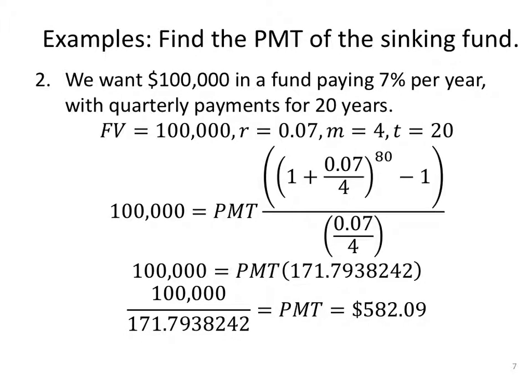Once again, we could find the payment. We want $100,000 in a fund paying 7% per year with quarterly payments for 20 years. Identify your variables. Future value is $100,000. 7% in decimal form, 0.07. Quarterly happens four times per year for 20 years. Enter in all of our values, making sure we put FV on the left-hand side of the equal sign. We do not know PMT, so we'll leave it.